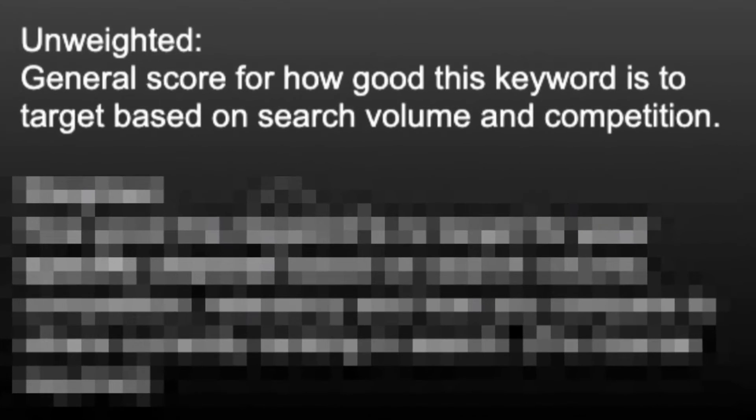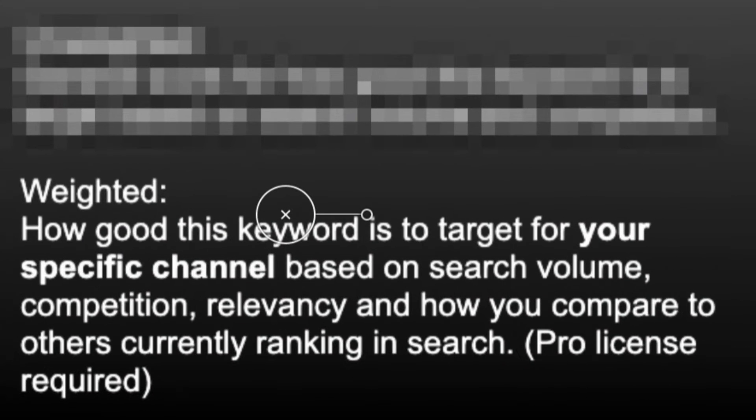The unweighted score refers to how good this keyword is to target based on search volume and competition. The weighted score is also very good, 71 out of 100, which refers to how good this keyword is to target for your specific channel based on search volume, competition, relevancy, and how you compare to others currently ranking in search. A pro license is required for this, but if you use the promo code HermansBuddy at checkout, you'll get 20% off. I'll put a link to TubeBuddy in the description below — it's well worth it because it's going to save you a lot of time doing keyword research.